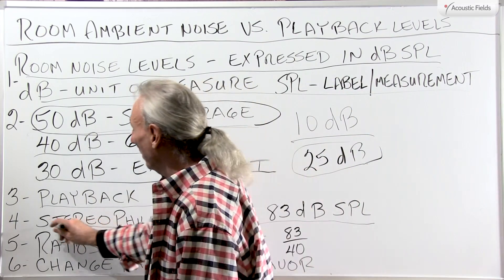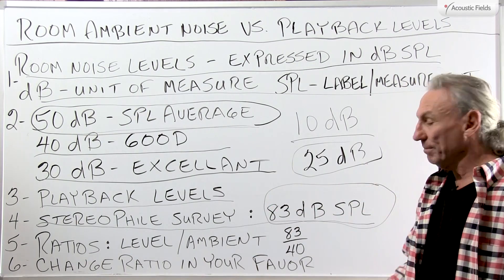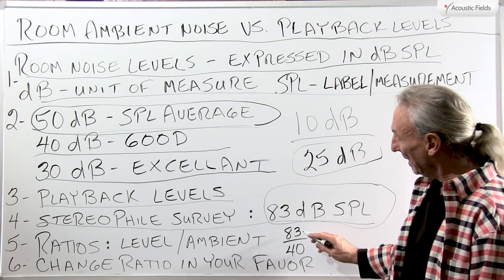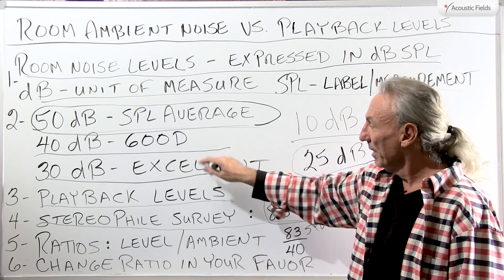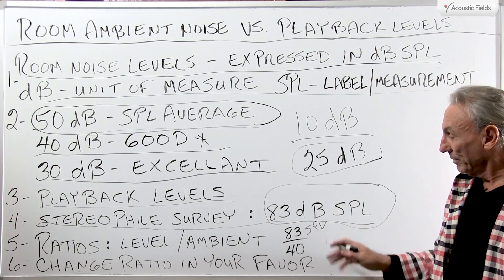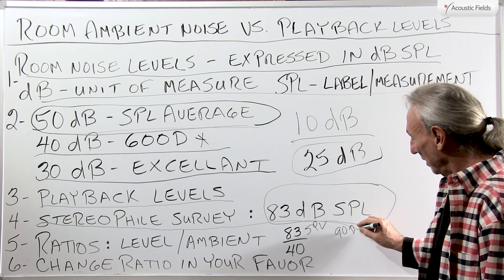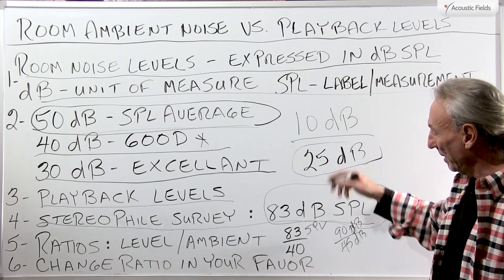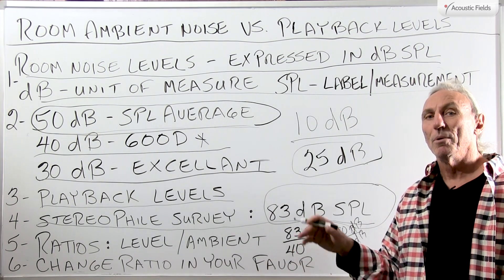Stereophile, a popular hi-fi magazine, did a survey many years ago and found that people actually measured the pressure levels they listened at — 83 dB SPL was the average. If we take that 83 SPL and put it over our noise levels — say the 40 dB 'good' level — you can see it's about a two-to-one ratio. That's a good rule of thumb. If you're playing at 90 dB, your background noise should be around 45 dB. The lower the noise floor in your room, the more music you're going to hear.